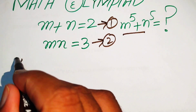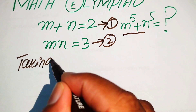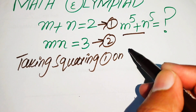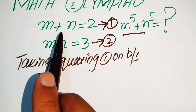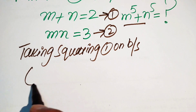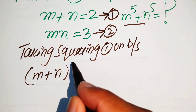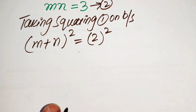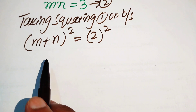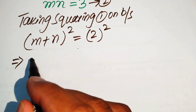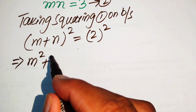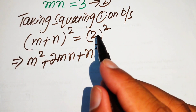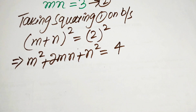First we focus on equation number 1 and take squaring on both sides. When we square this equation it is written as m plus n whole square equals 2 squared. The left hand side uses the well-known identity: m squared plus 2mn plus n squared equals 2 squared, and we know that 2 squared equals 4.